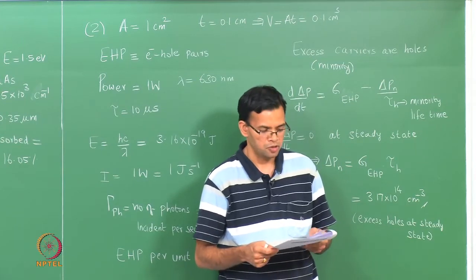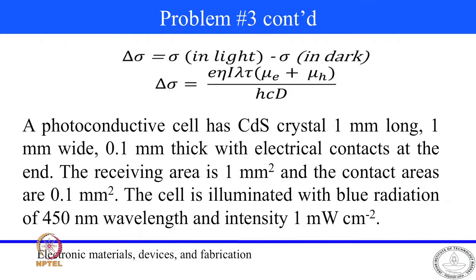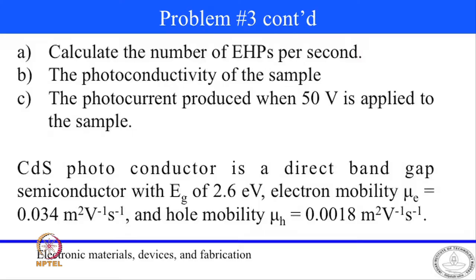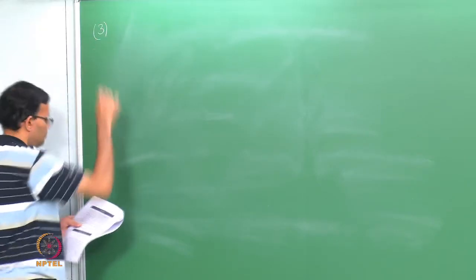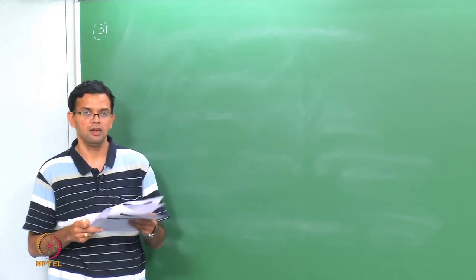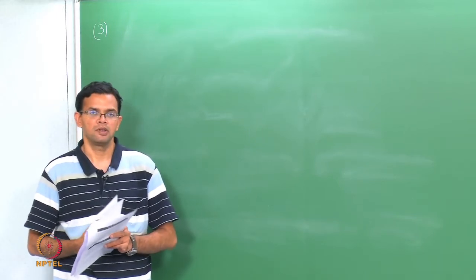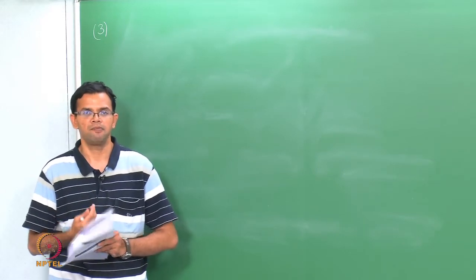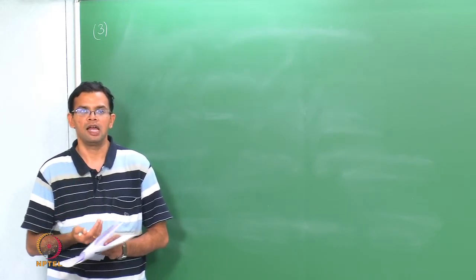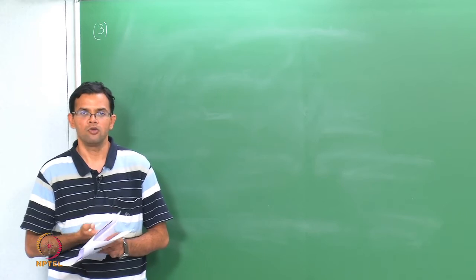Let us now go to Problem 3. We have a direct band gap semiconductor with no trap states — no defects or traps located within the band gap. This is important because trap states can trap carriers and these have a longer lifetime than electrons and holes in the band, which affects carrier lifetime and properties like conductivity and quantum efficiency.